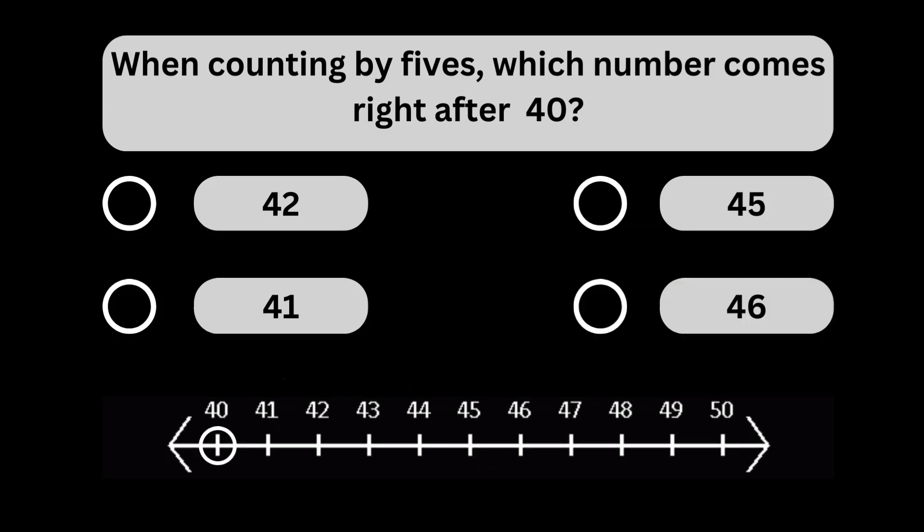When counting by fives, which number comes right after 40? When counting by fives, the number 45 comes right after 40.